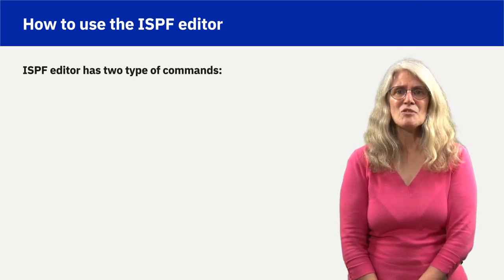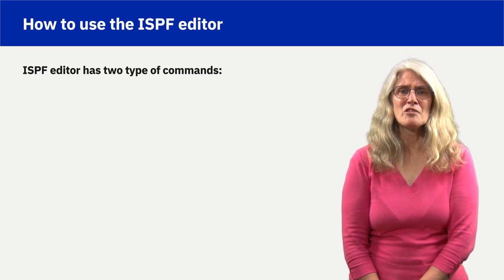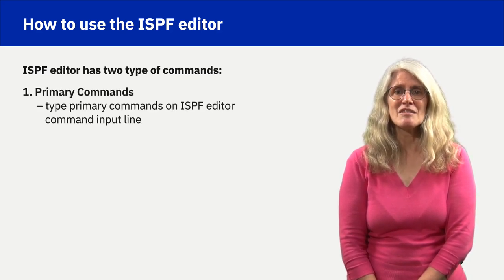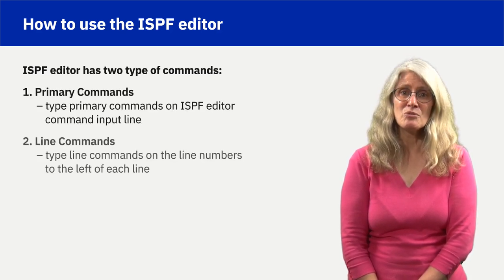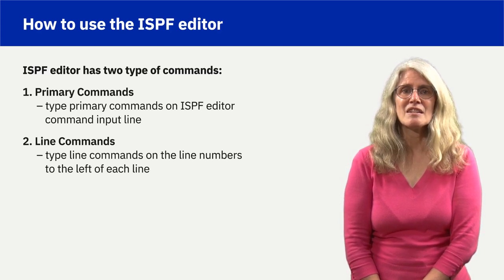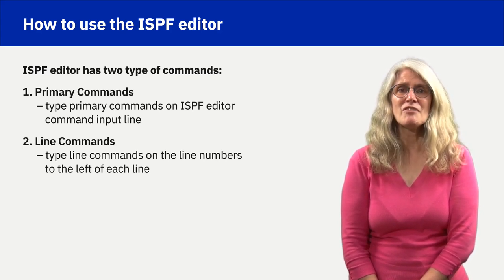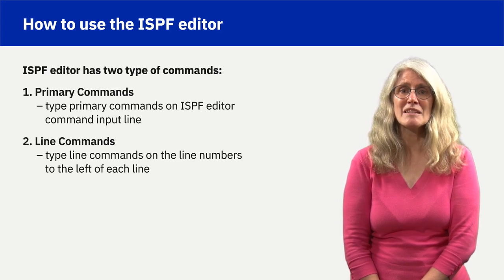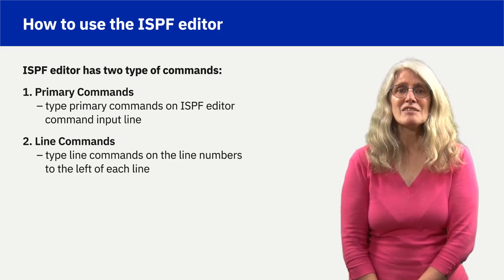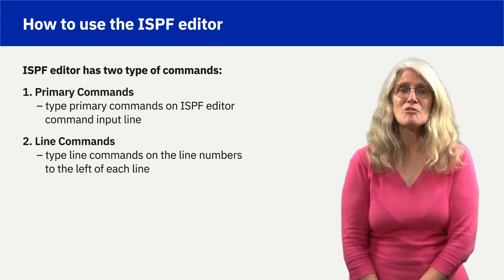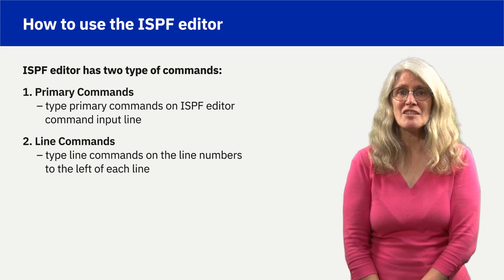The basics of using the ISPF editor are: one, primary edit commands, and two, line commands. The ISPF editor modifies the text lines with primary commands entered on the command line, and by entering line commands by overtyping the line numbers to the left of the text lines.